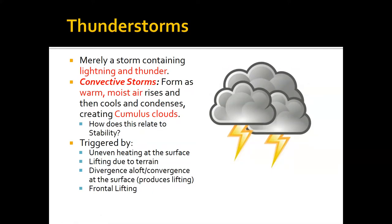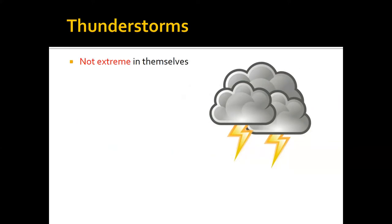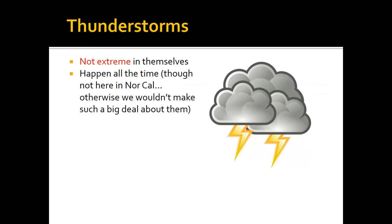Thunderstorms really aren't extreme in themselves — they're very common across most of the United States. However, here in Northern California and much of coastal California, thunderstorms just aren't common. That's why for us they're a big deal, because we just don't experience them. The reason is we don't have enough heat and moisture — our ocean is too cold, right off the coastline, which gives us a lot of cold air, and we're usually lacking the heat and moisture needed to get thunderstorms.